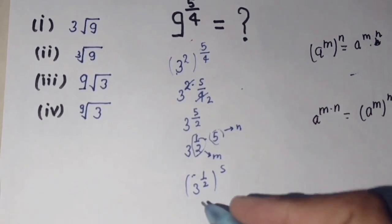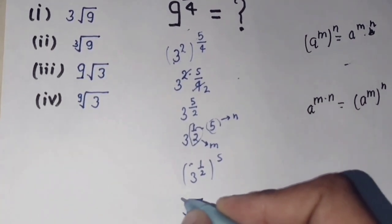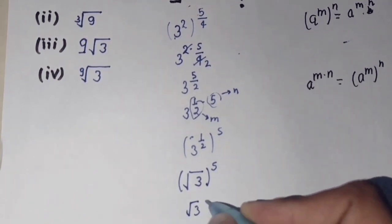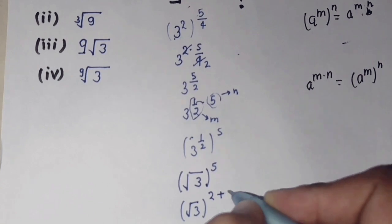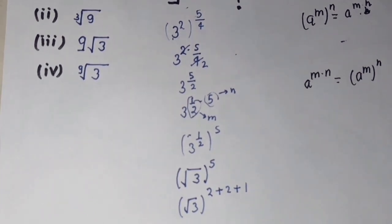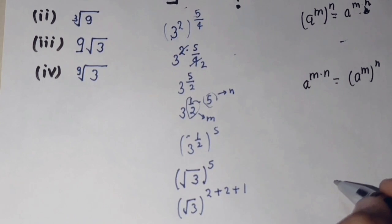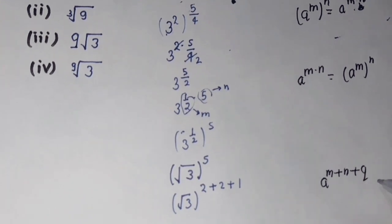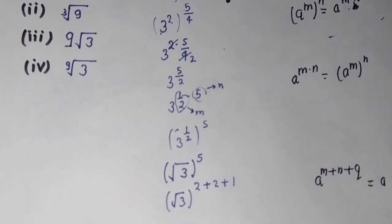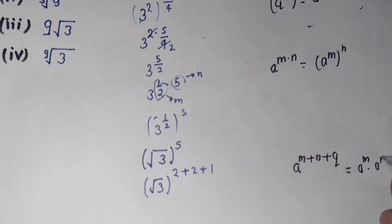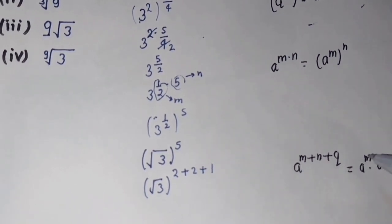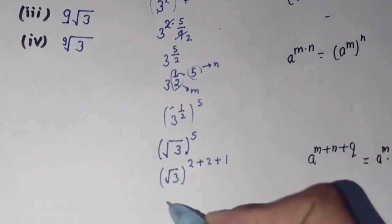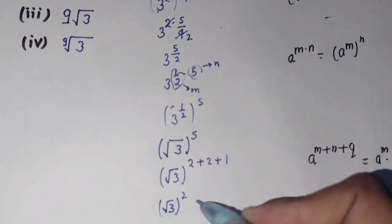Inside the square root, the power 5 I can write as 2 plus 2 plus 1. Using the formula: a raised to power m plus n plus q equals a raised to power m times a raised to power n times a raised to power p.